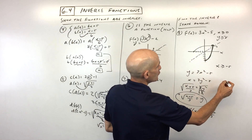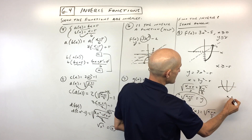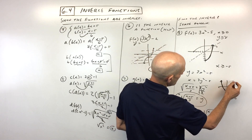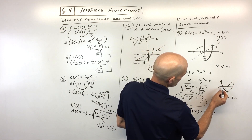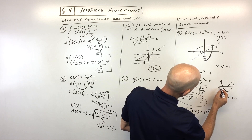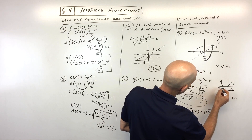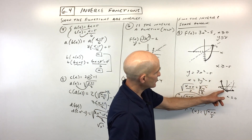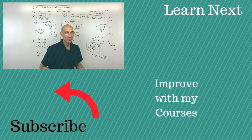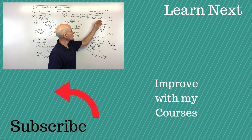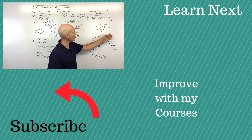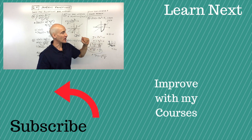If our original domain had been x less than or equal to zero instead, we'd be working with the left branch, and reflecting over y equals x would give the negative square root — that negative reflects the graph over the x-axis. The key is to find the domain and range of the original function, because the range of the original function becomes the domain of the inverse function.